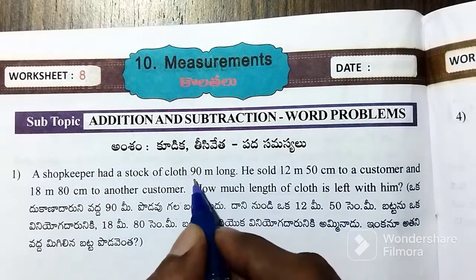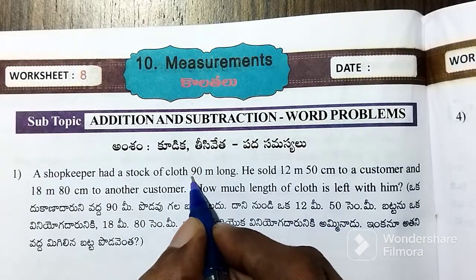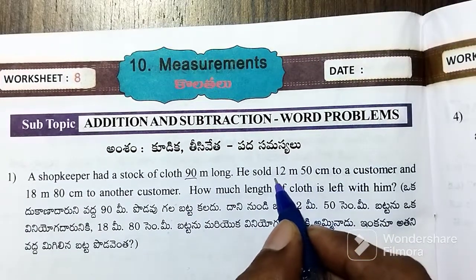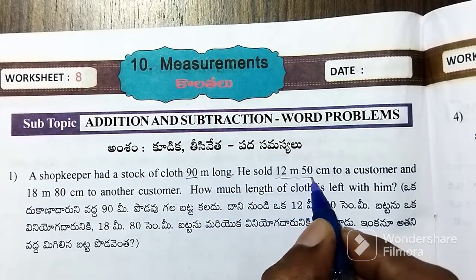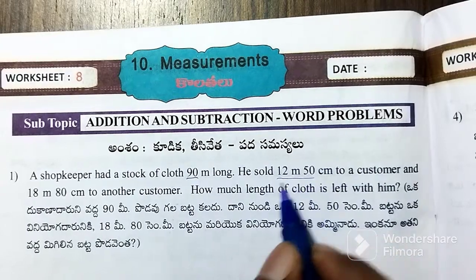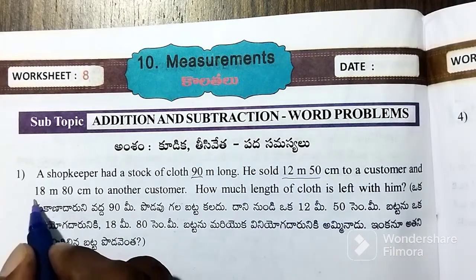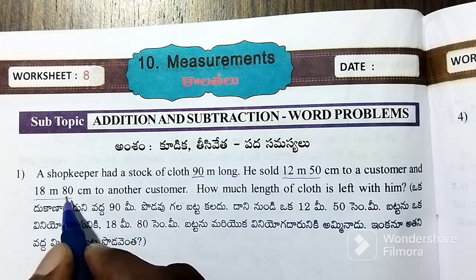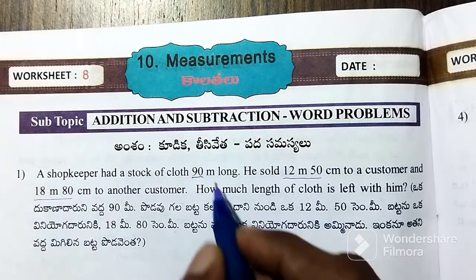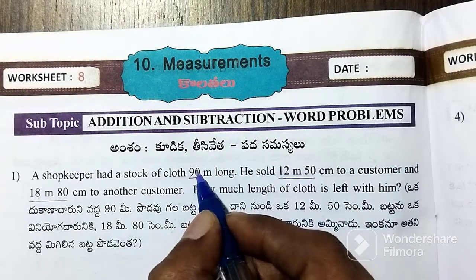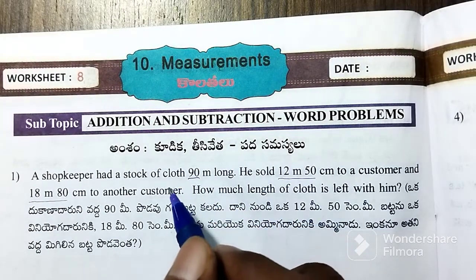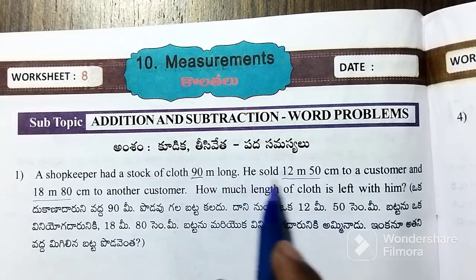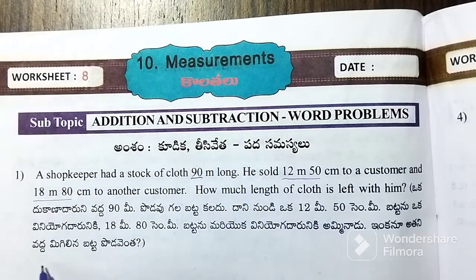In the worksheet: 90 meters of cloth. One customer had 12 meters 50 centimeters, another customer had 18 meters 80 centimeters. We need to find the length of cloth left with him.